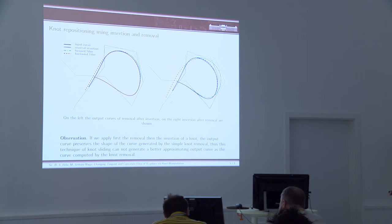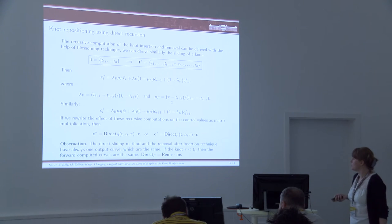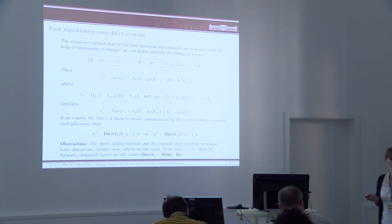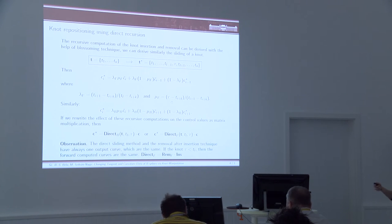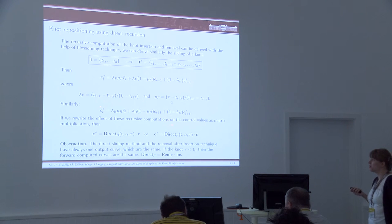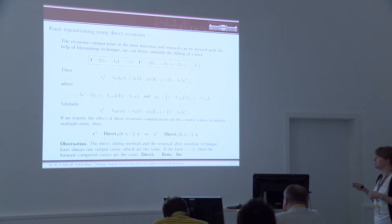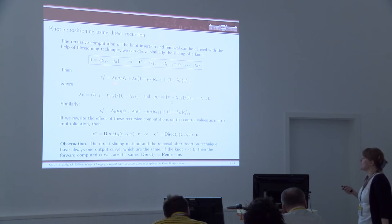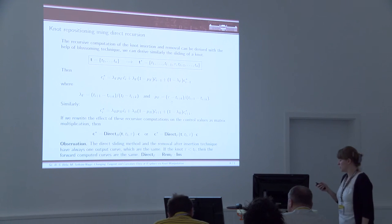That's why we stay with the method of first inserting the new node value and then removing the unnecessary one. We then tried to gain a direct formula to compute the node repositioning with one recursive computation. We could derive this formula — computable forward or backward on the control polygon — giving the same exact result when the modification preserves the curve shape. The computation can also be written in matrix multiplication form, using really sparse matrices for fast computation.